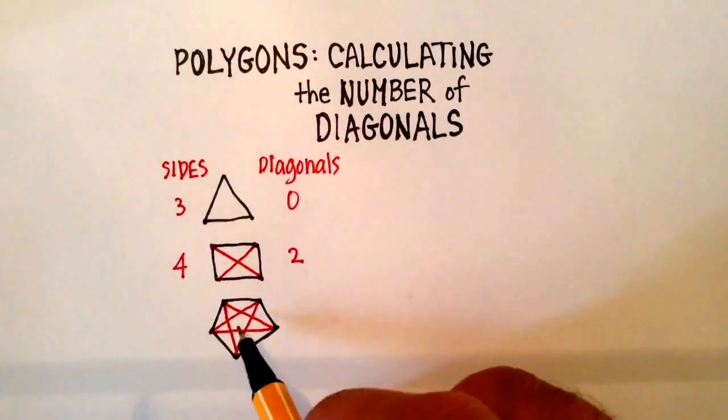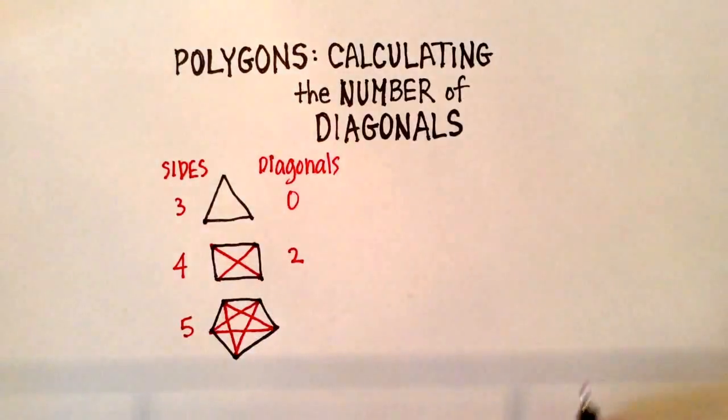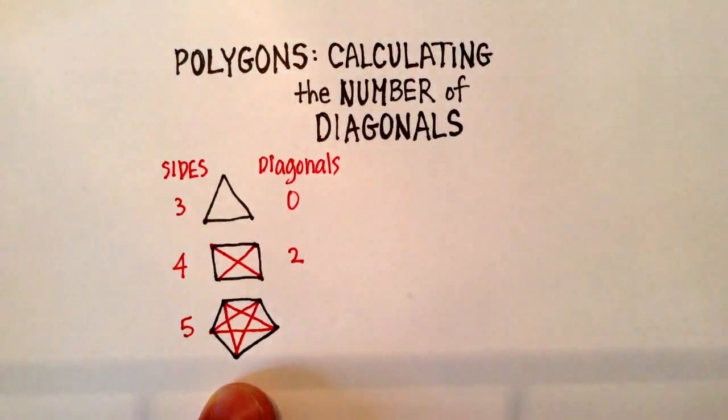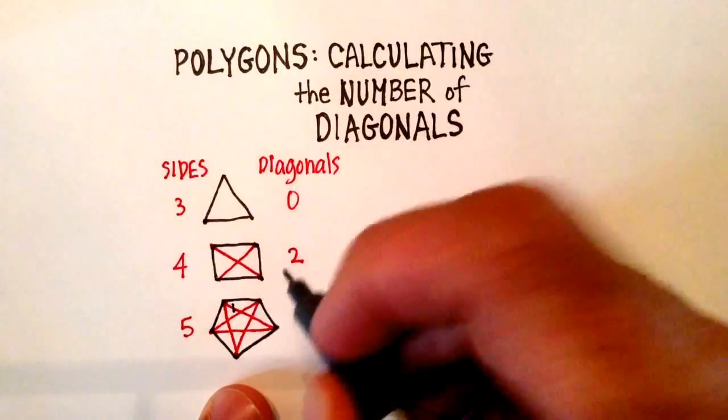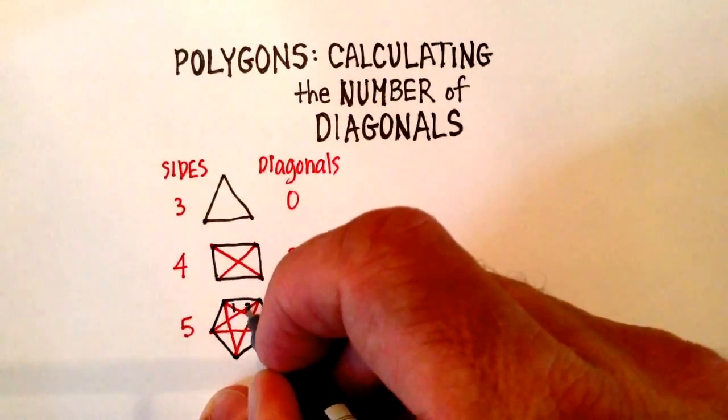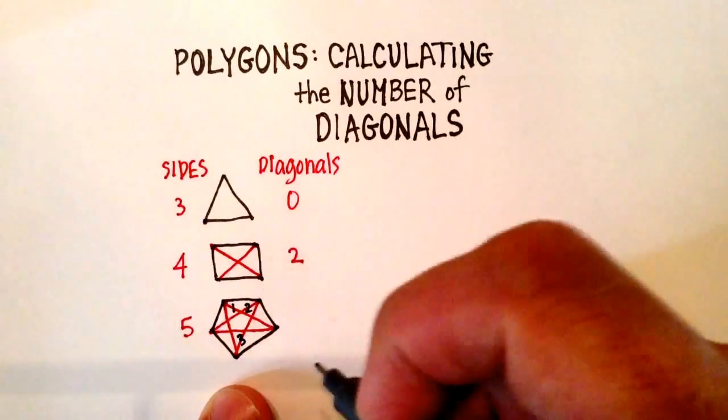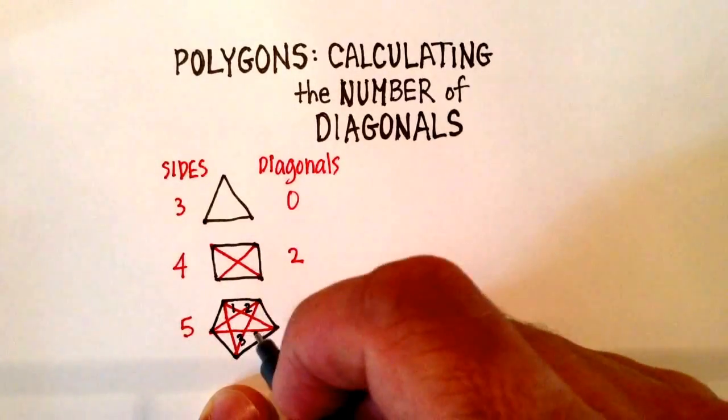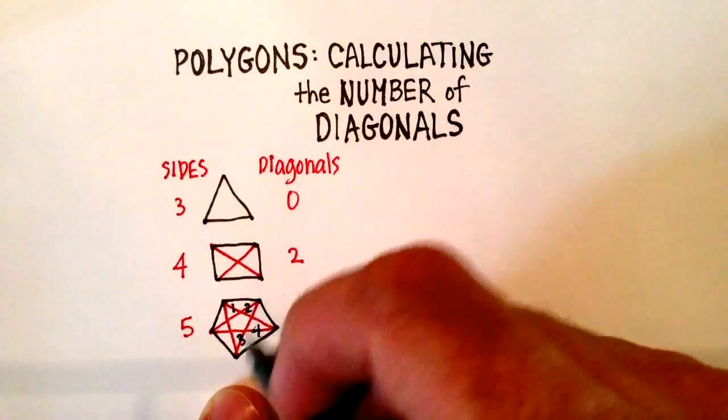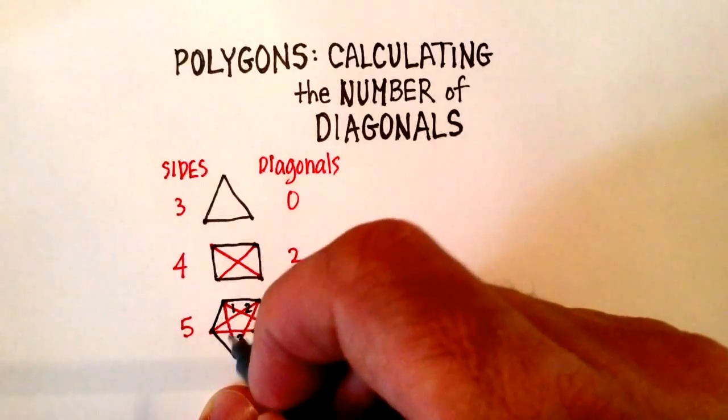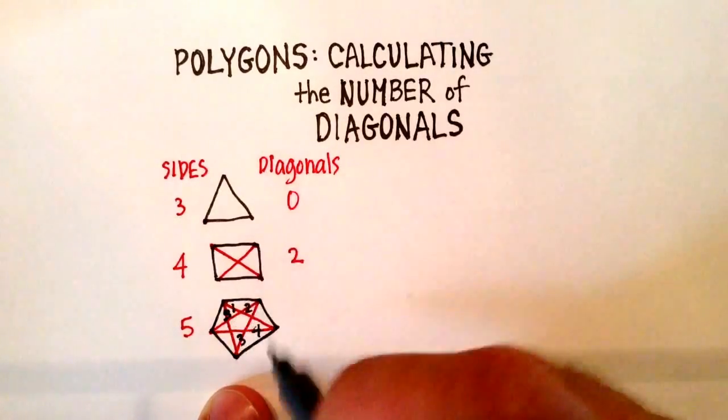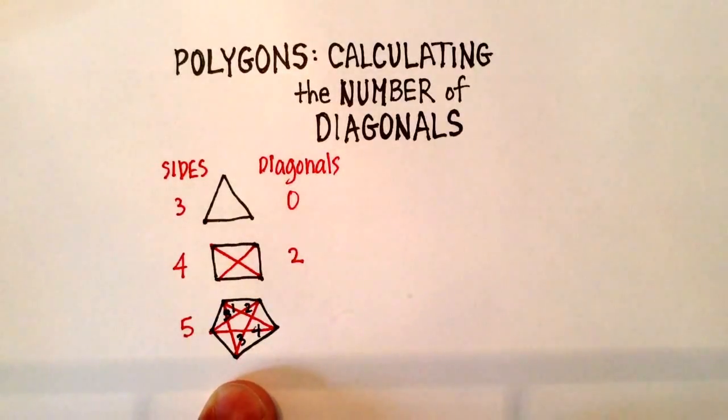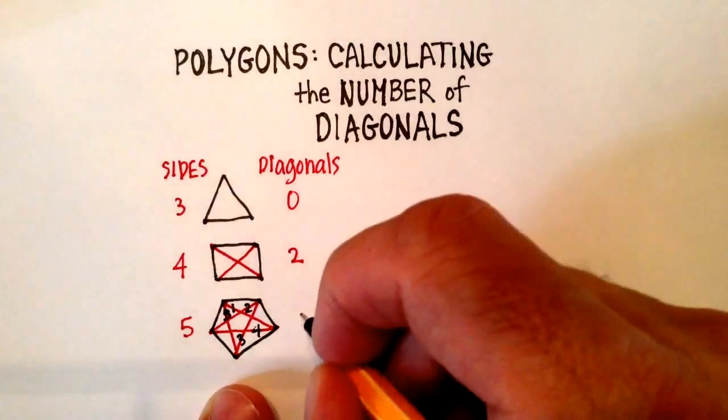Now, how many diagonals did I draw there? So with a five-sided figure, I drew, and let's just count them right out. This one here, one. Let's go to this one, two. This one, three. This one has already been taken, counted. This one, four. This one already been taken. This one would be five. This one already taken. This one already taken. So in total, with a pentagon, there are five diagonals.